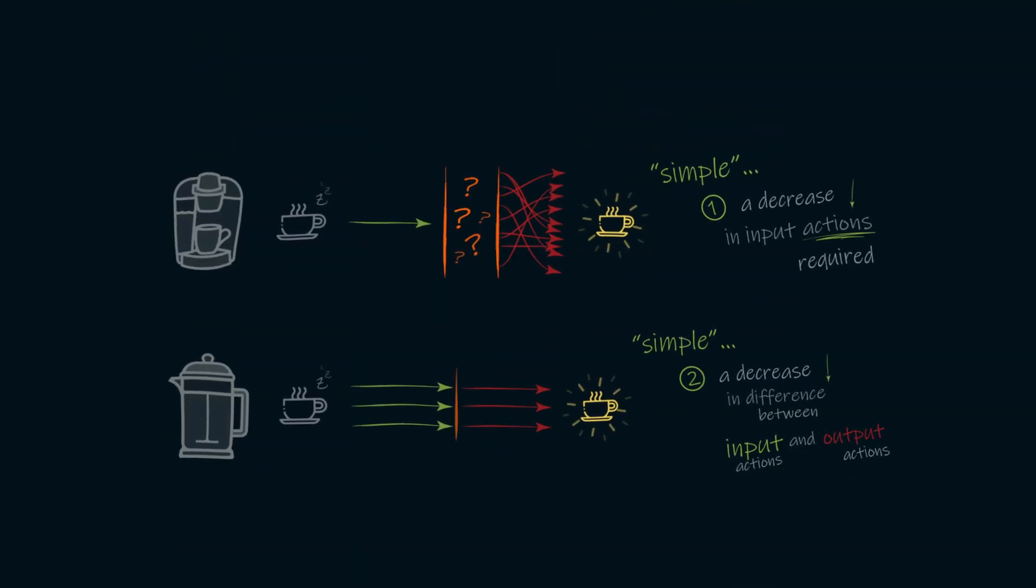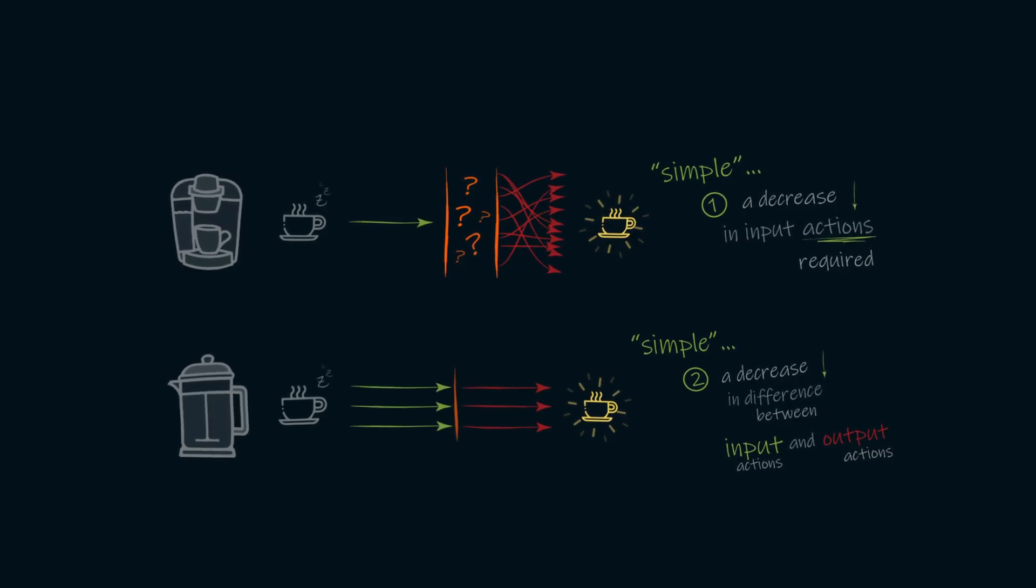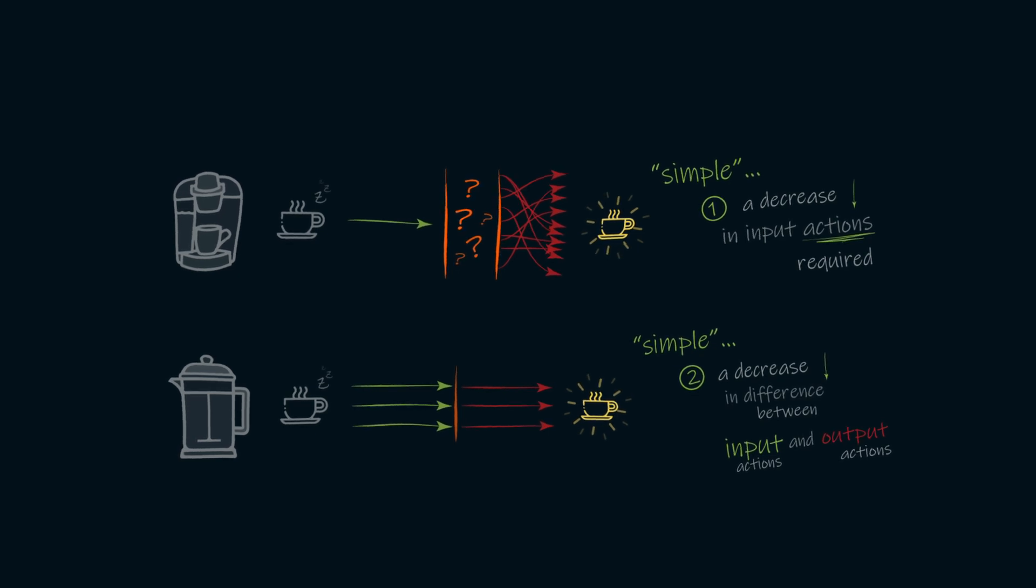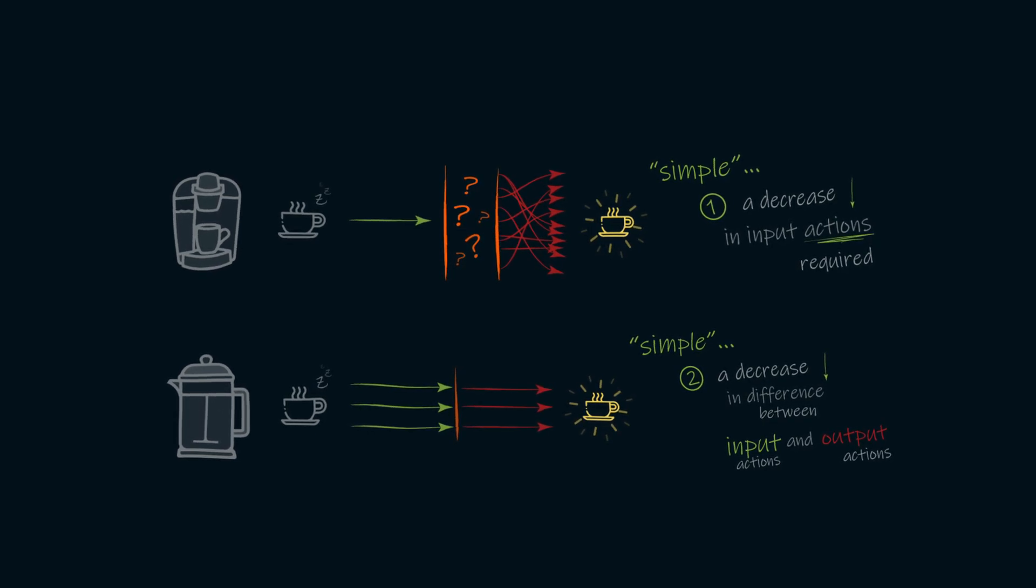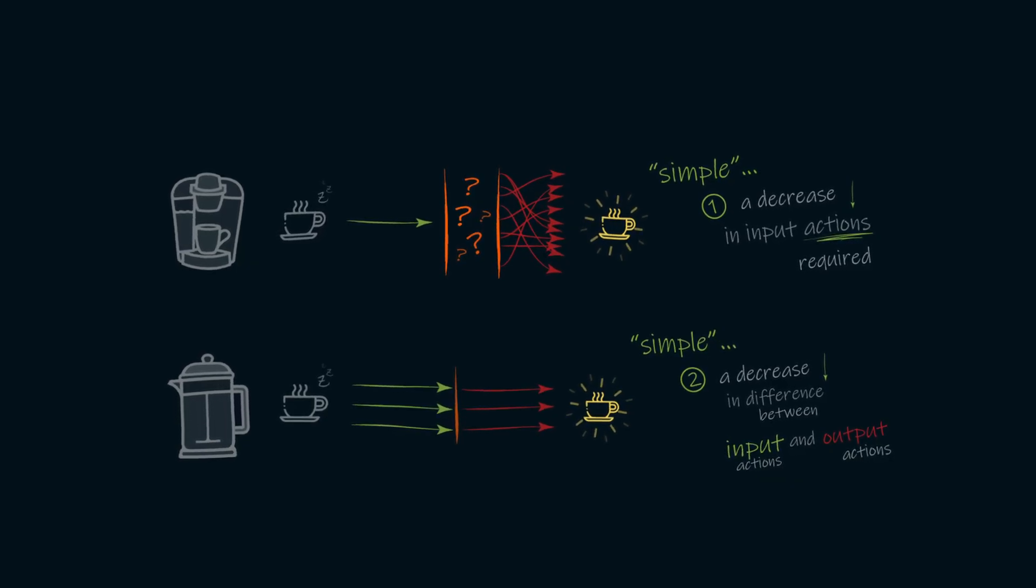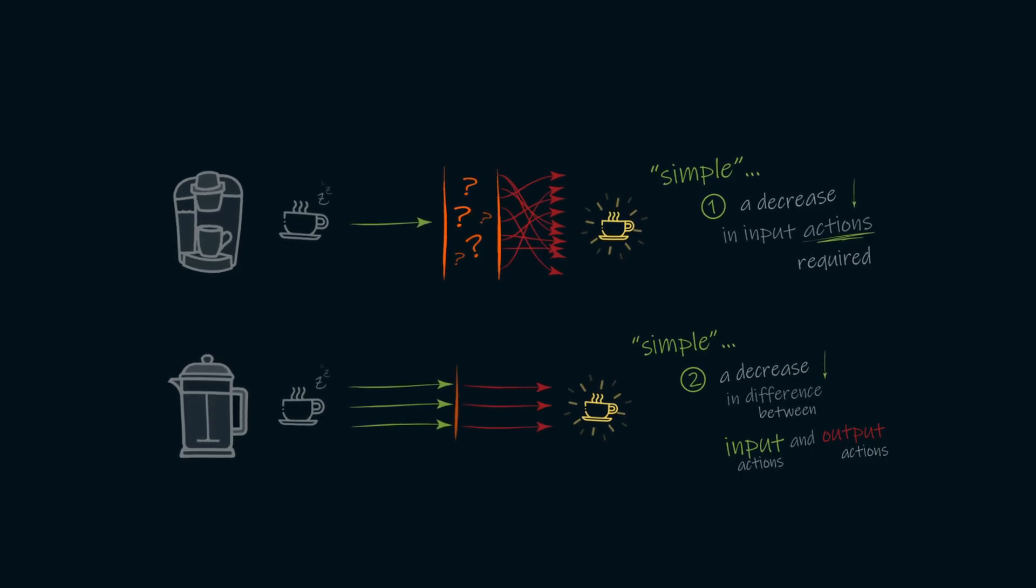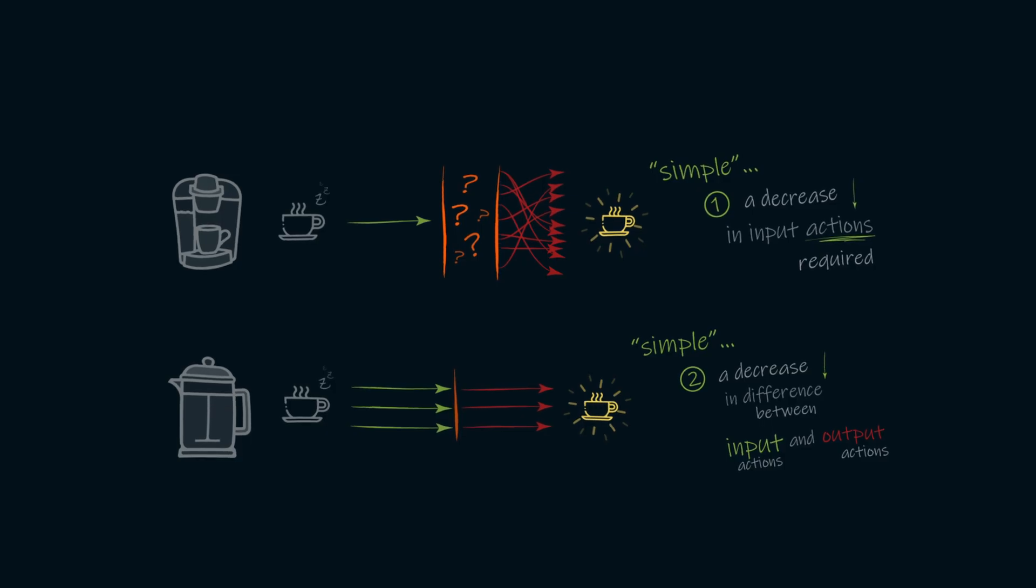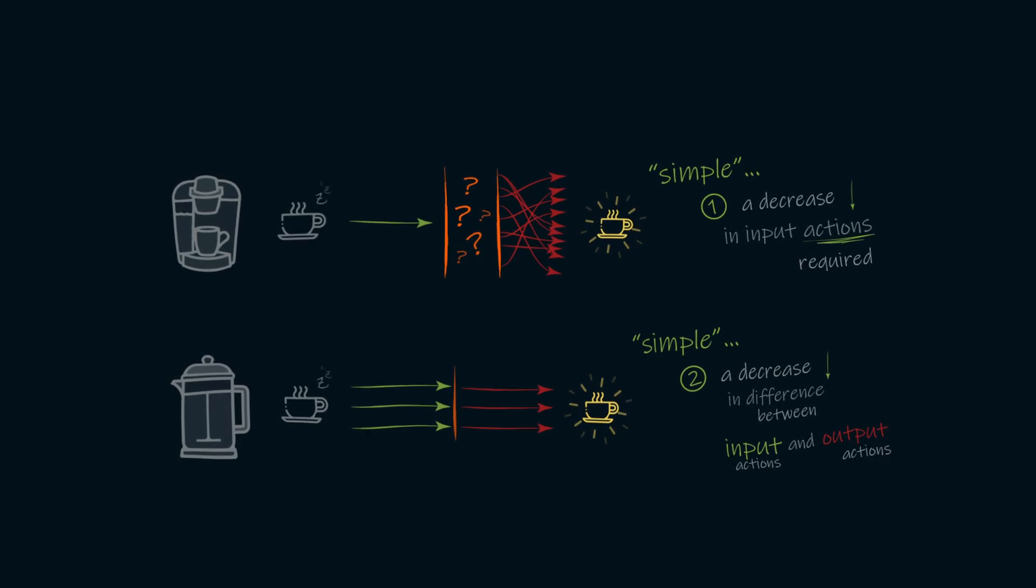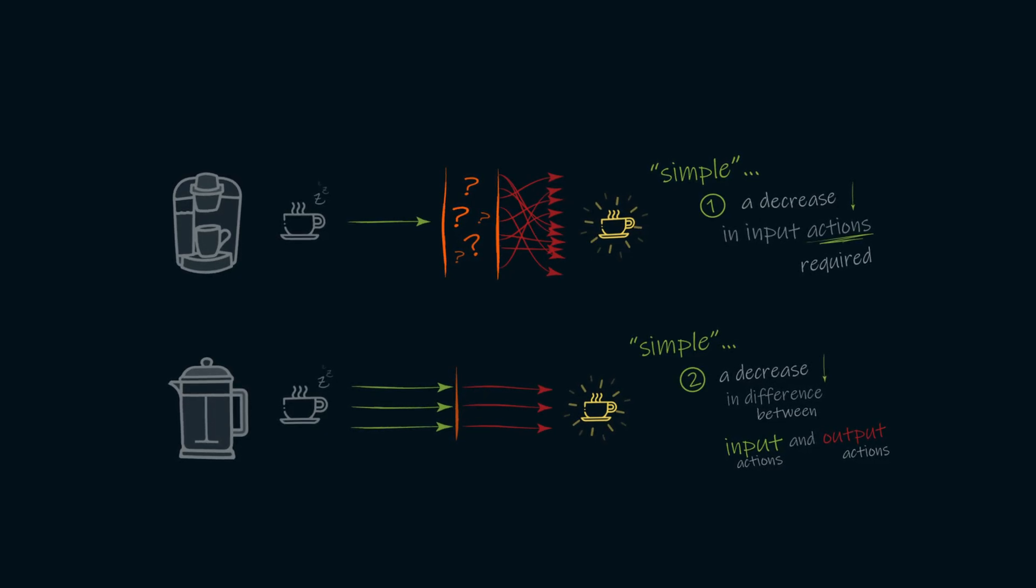So now let's revisit our two definitions of simplicity and see which way of making coffee we would prefer. Our Keurig, we can say, is simple, because we have fewer actions to perform to get our results. But our French press, we can also say is simple, because the exact actions we take are the exact actions that are performed. So our decision to choose which coffee machine to use comes down to making the decision of which simplicity we'd prefer working with.